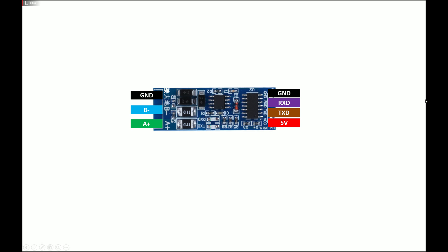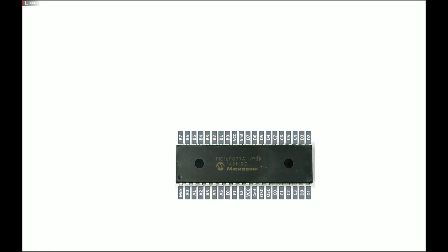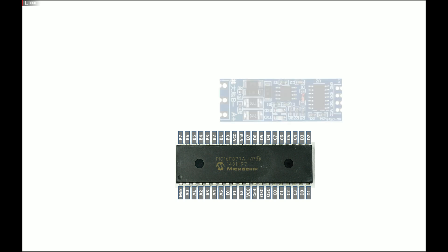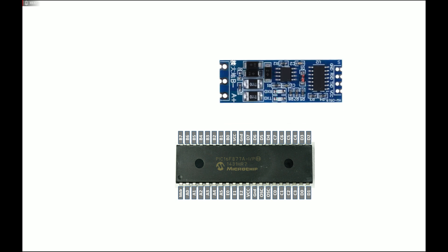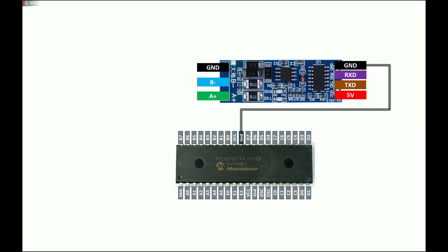Now let's do the full circuit. Here we have our PIC16F877A microcontroller with 40 pins in DIP format, and here is the TTL-to-RS-485 auto flow control module. On the right side, from top: Ground, RX, TX, and 5V or 3.3V. On the left: Ground, B negative, and A positive. For connections — connect the ground pin to the common ground of your PIC, and the 5V pin to the 5V supply. This module draws only around 50 to 100 milliamperes.